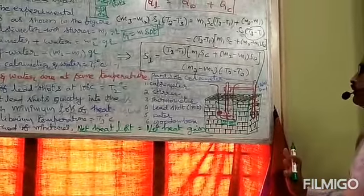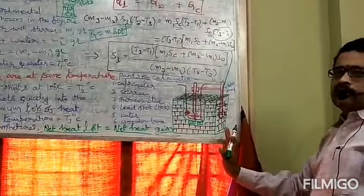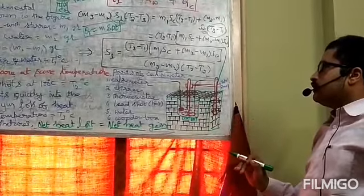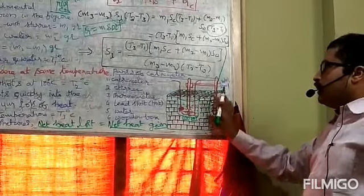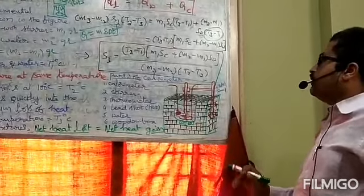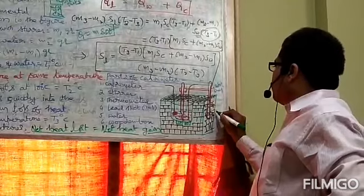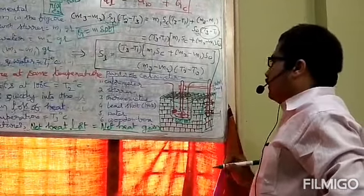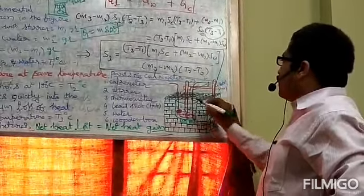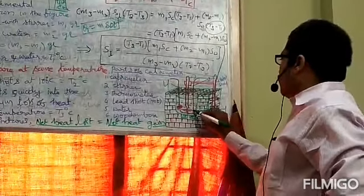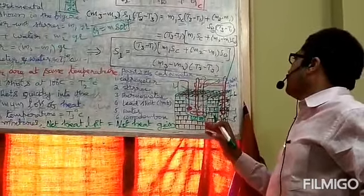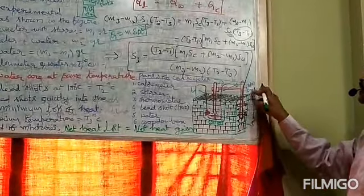Let us see the calorimeter and its parts. The calorimeter is placed inside a wooden box surrounded by insulating material like sawdust or thermocol sheets. The main parts are: 1. Calorimeter, 2. Stirrer, 3. Thermometer, 4. Lead shots, 5. Water, 6. Wooden box, and 7. Retort stand.